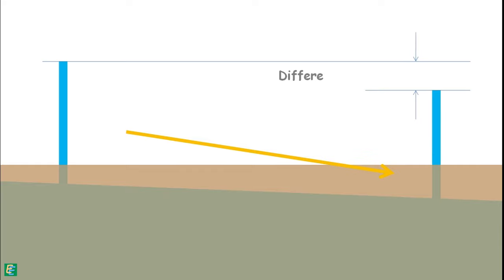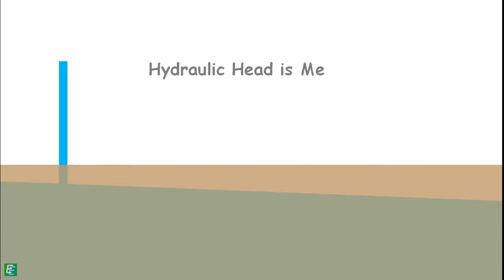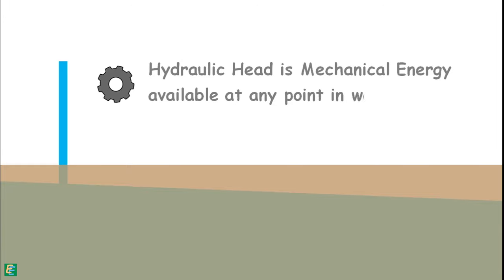When a soil has extremely low permeability, it is termed as impervious soil. Water in the soil flows from one point to another only if there is a difference of hydraulic head. The hydraulic head is the amount of mechanical energy available at any point in the water.